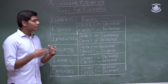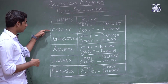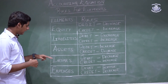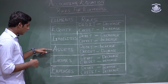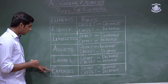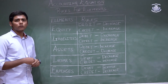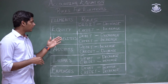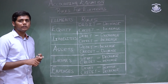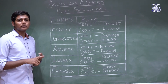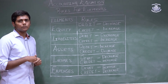These are the different rules. If you look closely, the rule for equity, liability, and income is the same — debit when it decreases and credit when it increases. The rule for assets and expenses is also the same. These fundamental rules will be used for journal entries, ledgers, trial balance, and financial statements.